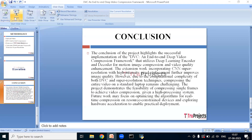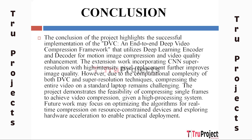The project's conclusion shows the successful construction of DVC, an end-to-end deep video compression framework, which employs a deep learning encoder and decoder for motion image compression and video quality enhancement. The extension work incorporating CNN super-resolution with high-intensity pixel replacement increases image quality even further. However, because both DVC and super-resolution approaches are computationally costly, compressing the full video on a typical laptop remains difficult. Given a high-processing system, the project proves the potential of compressing single frames to accomplish video compression. Future study could focus on refining the algorithms for real-time compression on resource-constrained devices and investigating hardware acceleration for realistic implementation.